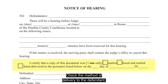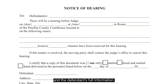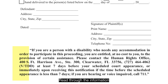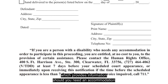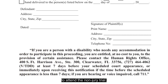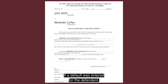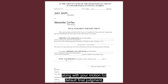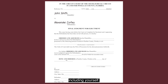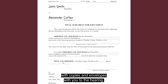Check the method of delivery to the defendant. Include the date of delivery and the defendant's full information. Read through the information at the bottom of the motion and order, which provides information should you need an accommodation to attend the non-jury trial. This should be done at least seven days before your scheduled court appearance. If a default was entered for the defendant, you can submit your proposed final judgment along with your motion for default final judgment, including copies and envelopes for all parties including yourself. Or if your case was set for hearing, bring the proposed final judgment with copies and envelopes to the hearing.